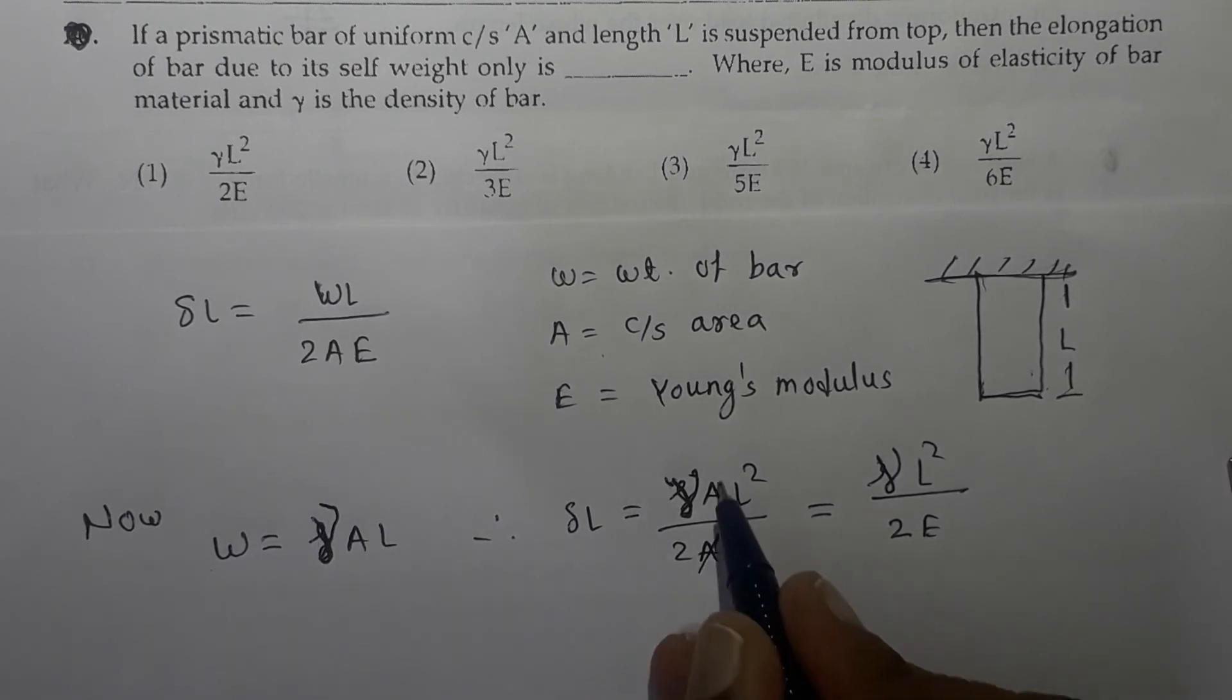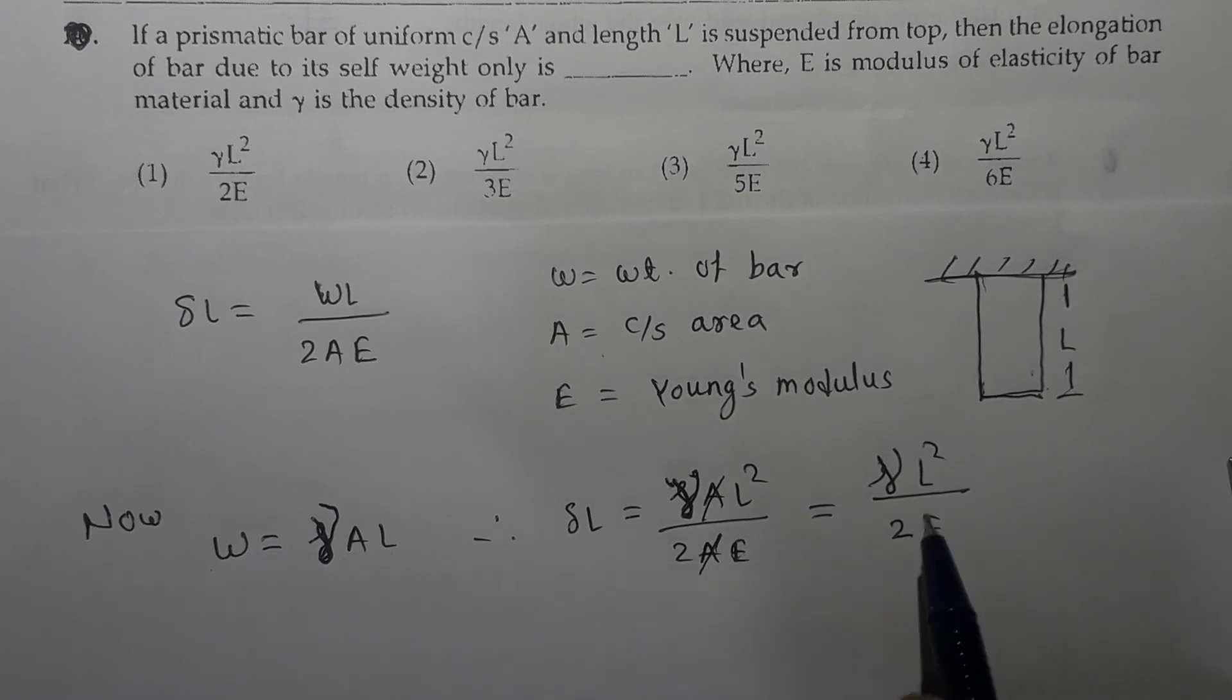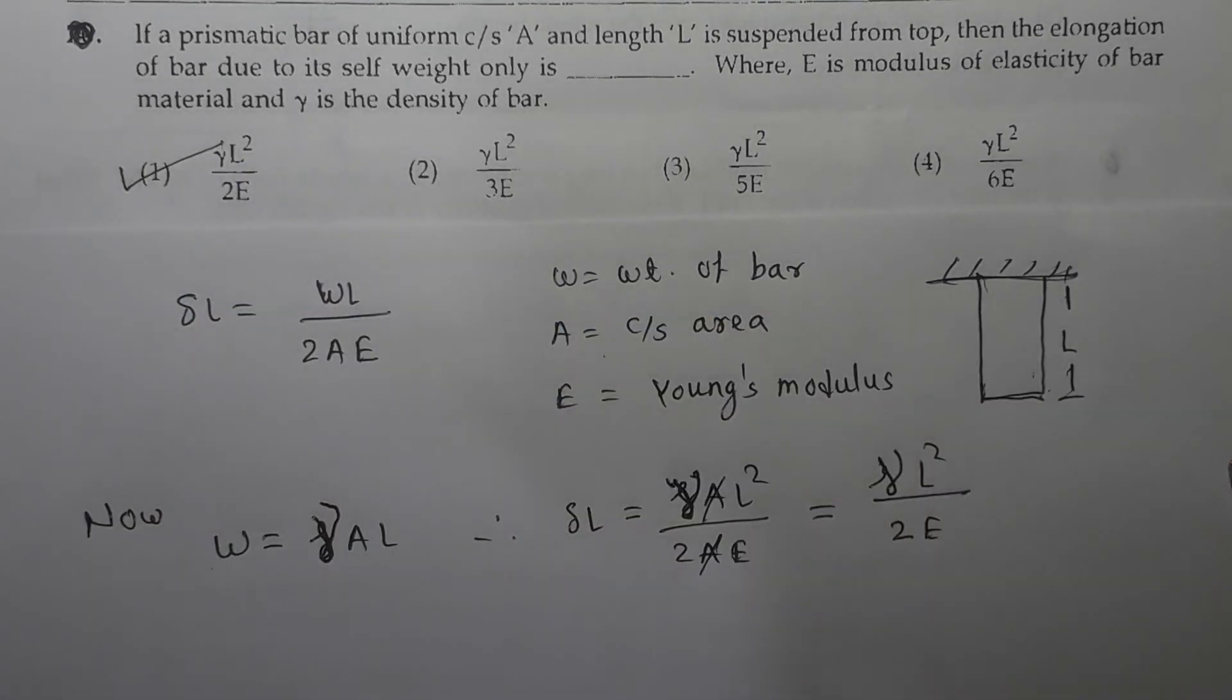So if I substitute W over here in this formula it will become gamma L square divided by 2AE. A will get cancelled out and the final relation will be delta L equals gamma L square divided by 2E. Option 1 is the correct option.